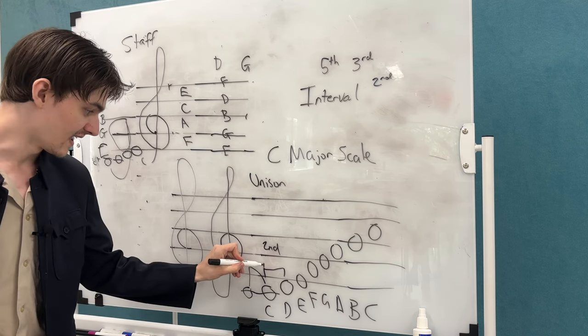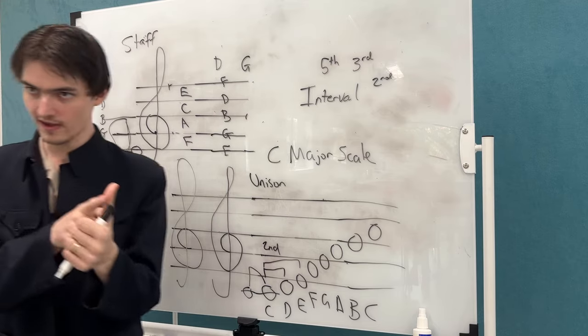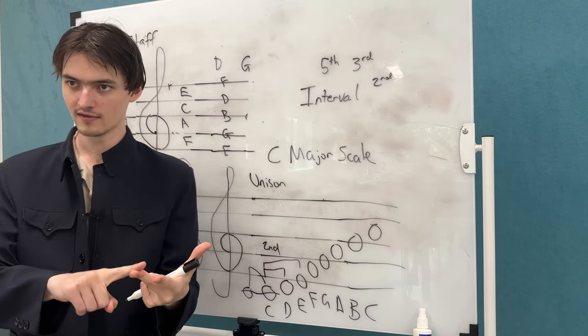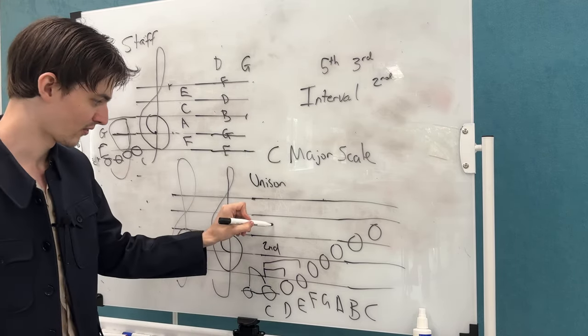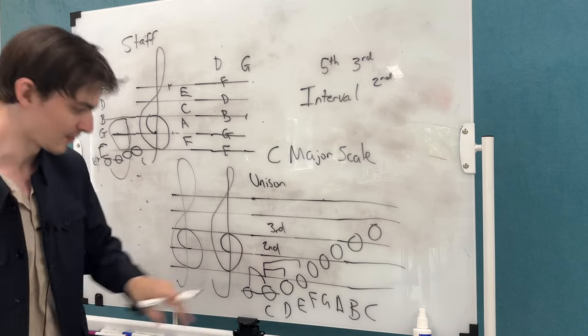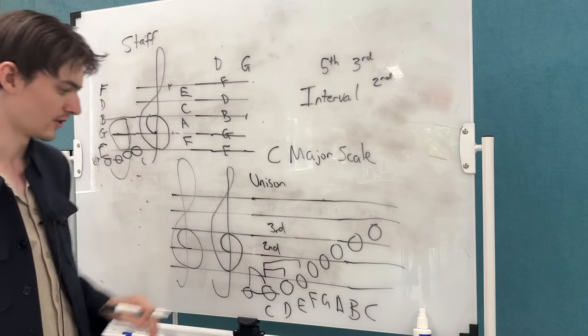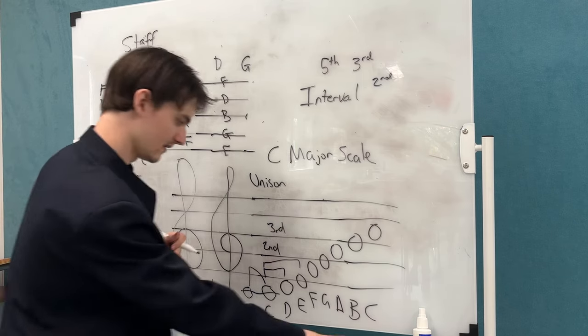If we're going to go C to E, C, D, E. That's a third. So you always start with the note that you're counting, and you include the note that you finish on as well in that.